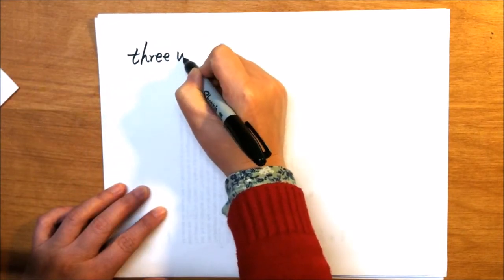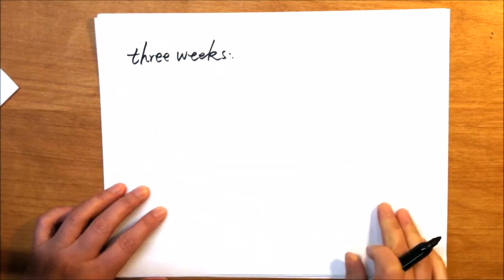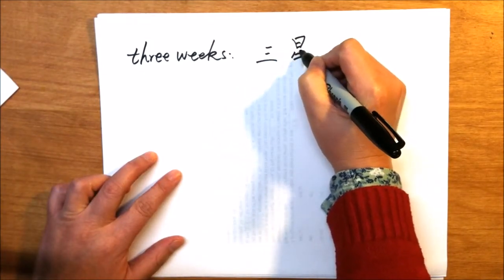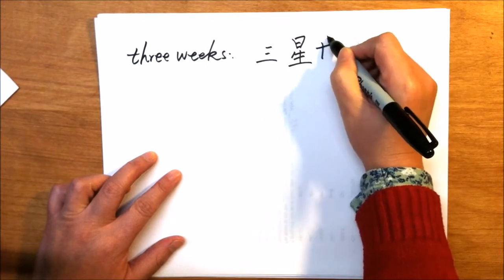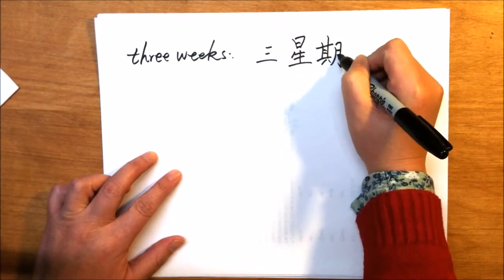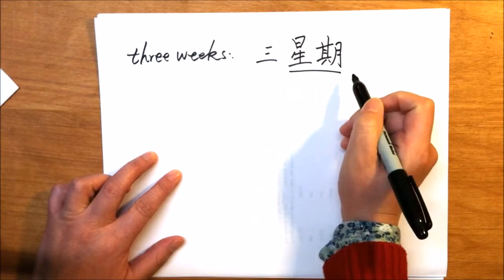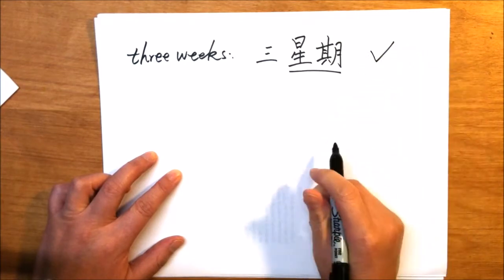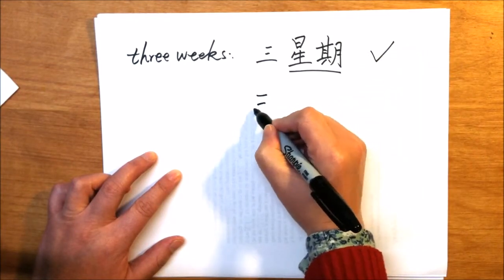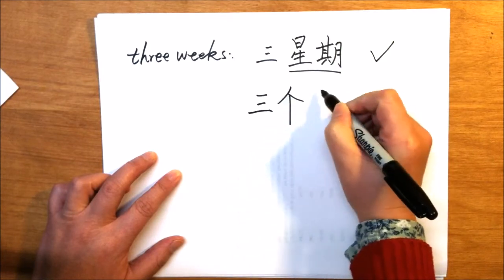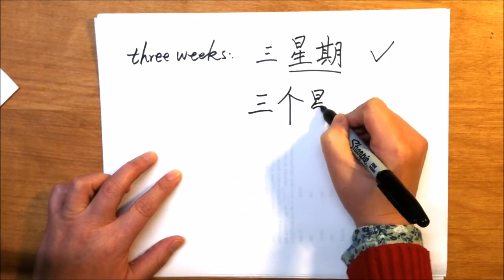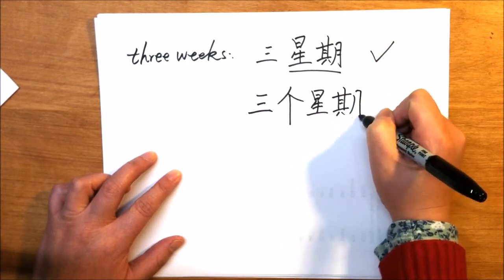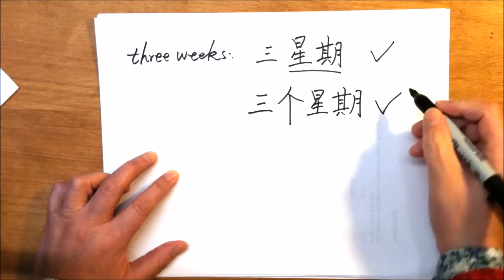Three weeks, 三星期. Week is 星期. Three weeks, 三星期, that's correct. And we add the measure word, 三个星期, that's also correct.